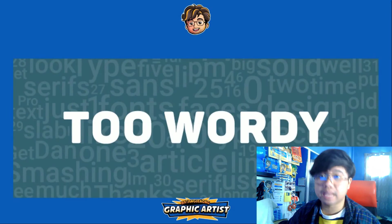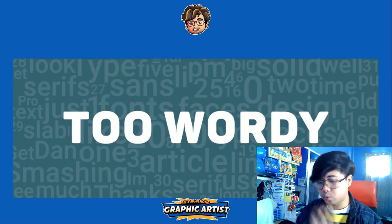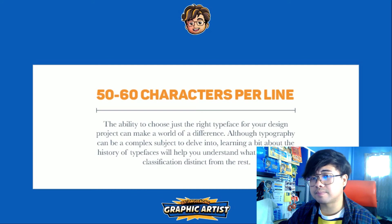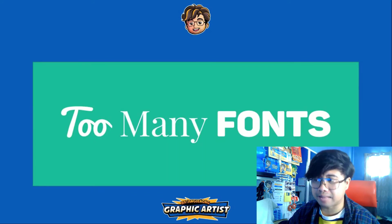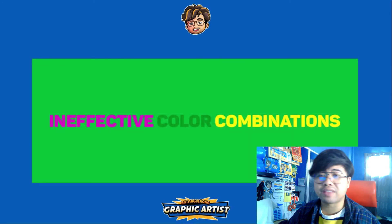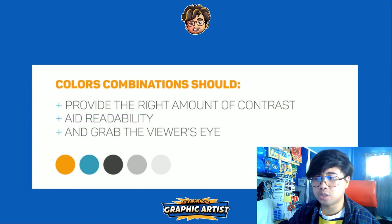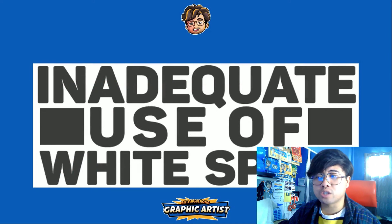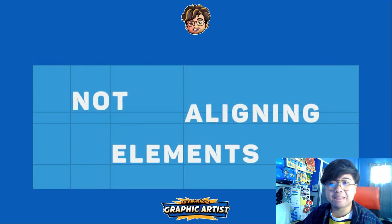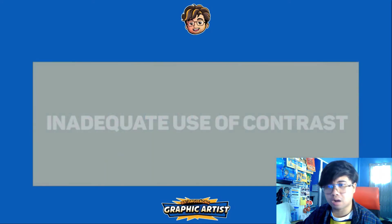Problematic designs to avoid: too wordy — avoid having too many words in your designs. Long lines of text — limit to 50 to 60 characters per line in a poster or project. Too many fonts — we have talked about that. Bad letter spacing, bad kerning — already discussed. Ineffective color combinations — colors that look bad together. Inadequate use of white space — designs so packed that they can't breathe. Compare a cluttered design to a minimalist one with lots of white space — the latter still looks professional and beautiful. Not aligning elements makes a design confusing.